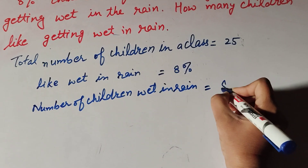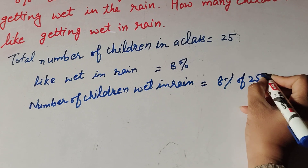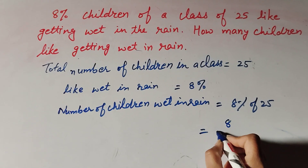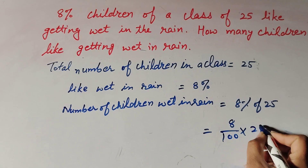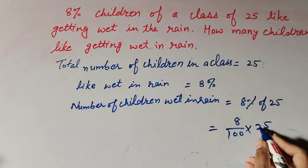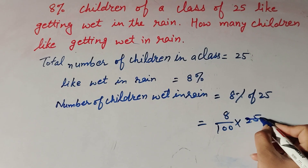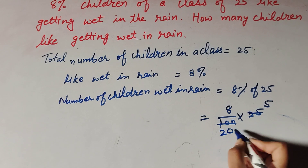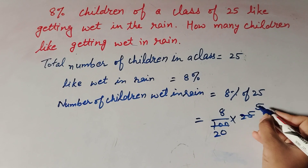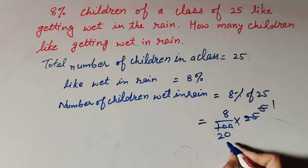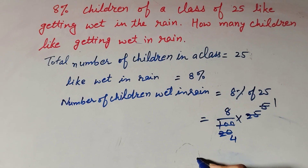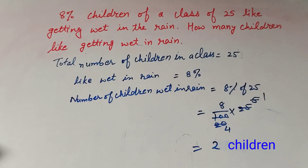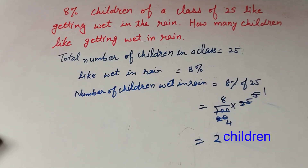The number of children who get wet in rain is equal to 8 percent of 25. 8 percent is 8 over 100, multiplied by 25. Now 25 and 100 are both divisible by 5: 5 fives are 25, and 5 twenties are 100. Again, 5 and 20 are both divisible by 5: giving 1 and 4. So 8 divided by 4 gives the answer 2. There are two children out of 25 who like to get wet in rain.